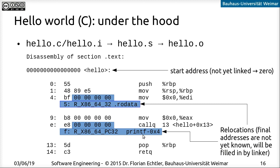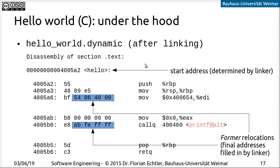One reference refers to the read-only data section containing the string, and another refers to an external library containing the printf function. After running the object file through the linker, the start address — a random address selected by the linker — is filled in. The references now contain actual data: one points to the data segment containing the string, and another points to a lookup table referring to the external library functions. That is what a C program goes through until it arrives at binary machine code.